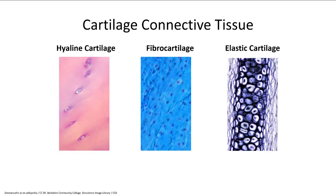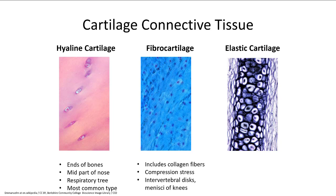Cartilage comes in three types. Hyaline cartilage is the most common, found at the ends of all bones — arthritis is a hyaline cartilage problem. It also forms part of the nose and the rings of the trachea you can feel on your neck. Fibrocartilage has strong collagen fibers and is found in intervertebral discs and the menisci of the knee, withstanding heavy weight and stress. Elastin cartilage has elastin fibers, giving flexibility, and is found in structures like the tip of the nose and the ears.